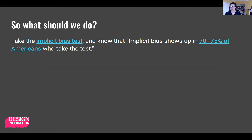So what should we do? First of all, know that you can do better. You can act like an unbiased ally to become an unbiased ally — it's a fake it till you make it kind of principle. Take the implicit bias test. Know that implicit bias shows up in 70 to 75% of Americans who take the test. You don't have to post your results to social media. Just become more aware. Make your unconscious biases conscious biases so that you can actually work against them.